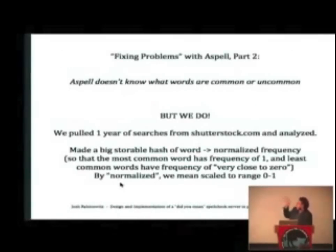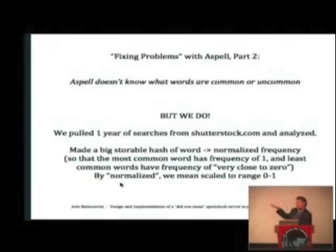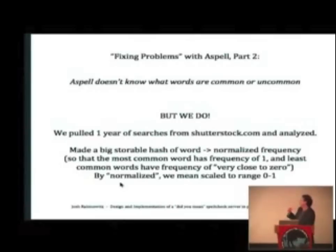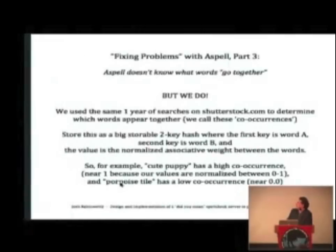ASPEL doesn't know what words are common or uncommon — but we do. I pulled one year of searches from Shutterstock, which was millions of searches, and made a large storable hash mapping each word to its frequency of occurrence. The most common word is something like 'woman', occurring in about 5 to 10 percent of searches. We normalize that to one, otherwise all the numbers would be very small. Really uncommon words have a frequency very close to zero.